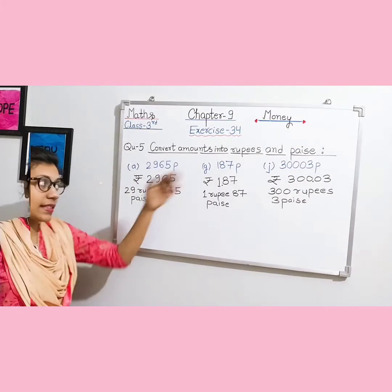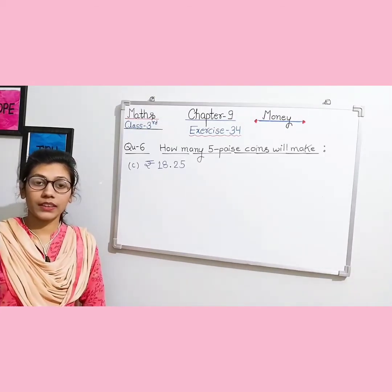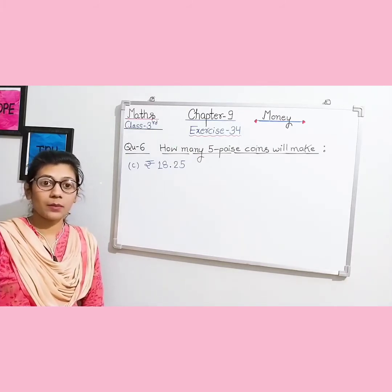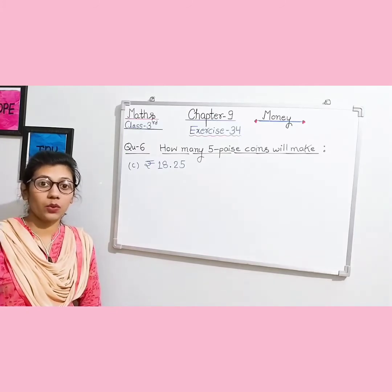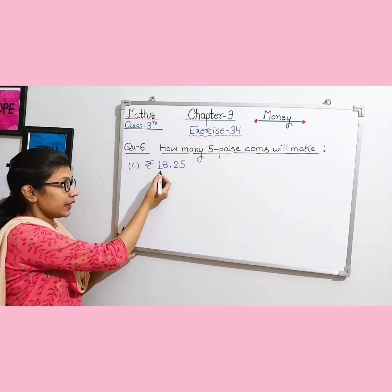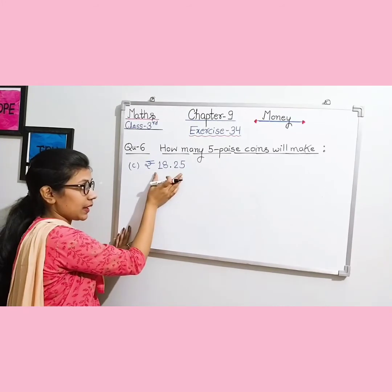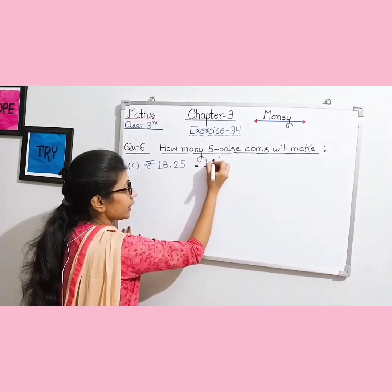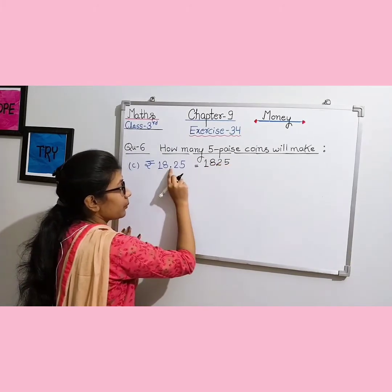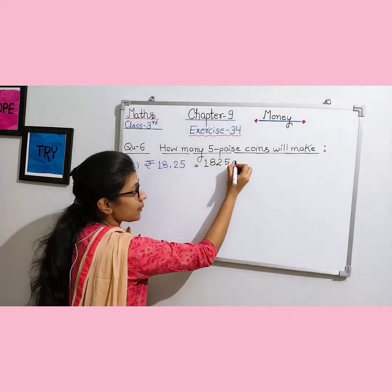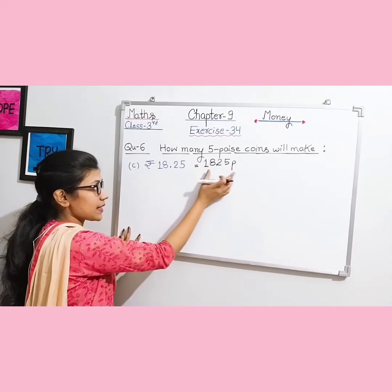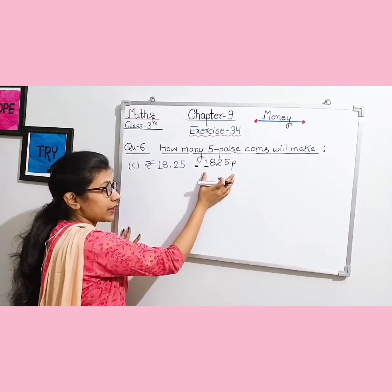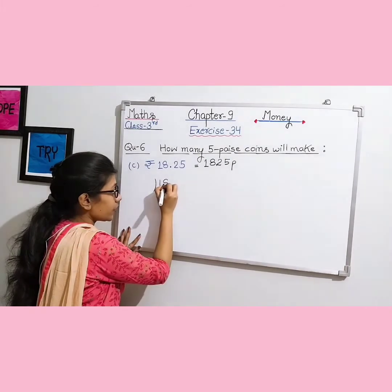Question number 6: find out how many 5-paise coins make the given amount. For example, question C: 18 rupees 25 paise. First convert to paise — write all digits together: 1825 paise (no rupee symbol, no decimal, use small 'p' for paise). Now we need to find how many 5-paise coins are in 1825 paise.